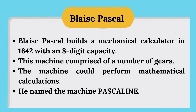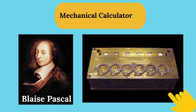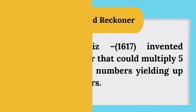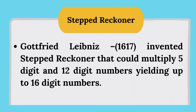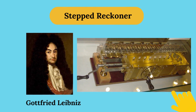Blaise Pascal built a mechanical calculator in 1642 with an eight-digit capacity. This machine comprised a number of gears, could perform mathematical calculations, and was finally named the Pascaline. Gottfried Leibniz invented the Stepped Reckoner, which could multiply 5-digit and 12-digit numbers, yielding up to 16-digit results.